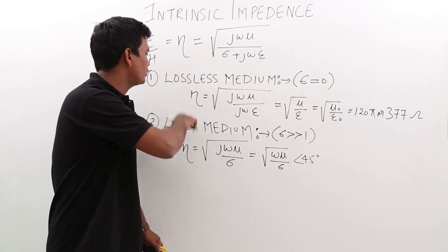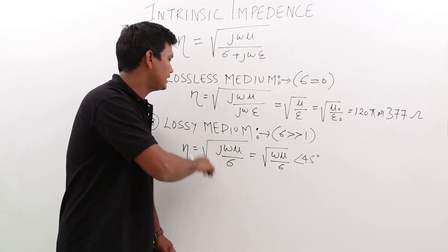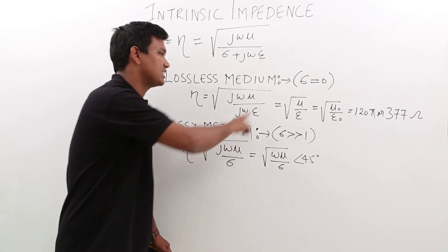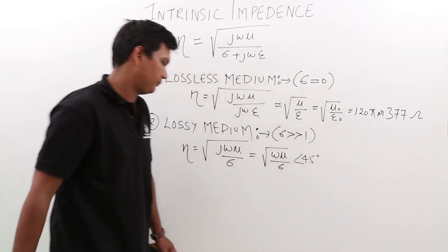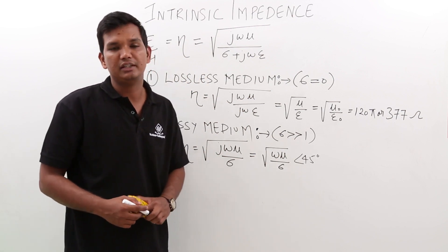In this exercise, we have found what the intrinsic impedance would be in case of a lossless medium where sigma is zero, or in case of a lossy medium where sigma is very high. We will see more on this in the next videos.